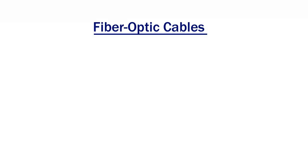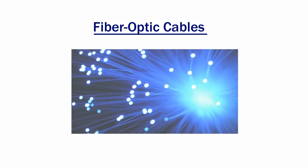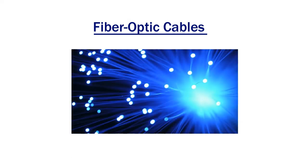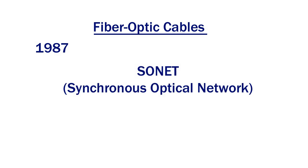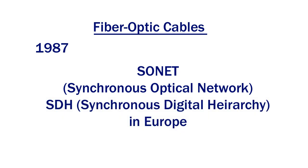AT&T by then no longer had its monopoly, and there were a lot of competing carriers all wanting to use their own standards for fiber optic. In 1987, all of the fiber optic carriers started dropping their own standards and decided to move to a then-new international standard called SONET, which stands for Synchronous Optical Network. In Europe, they were using what was called Synchronous Digital Hierarchy, known as SDH.